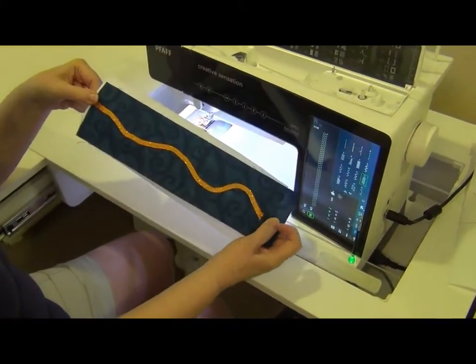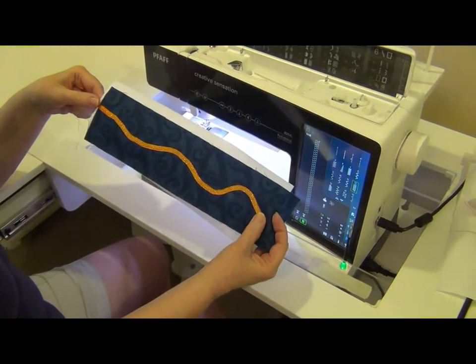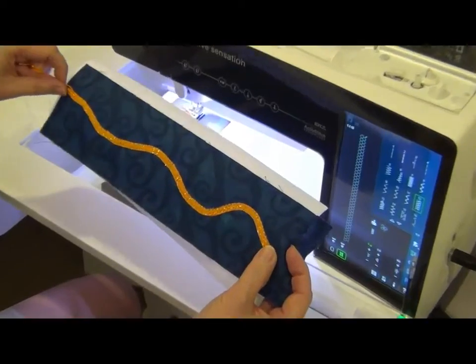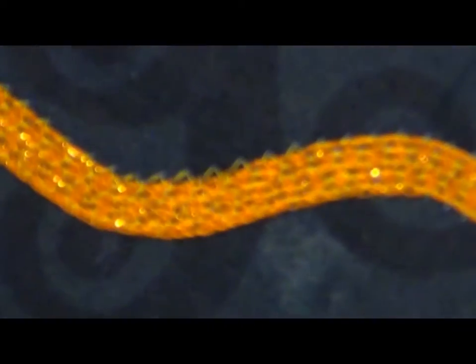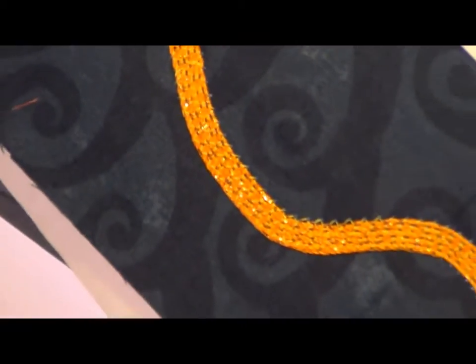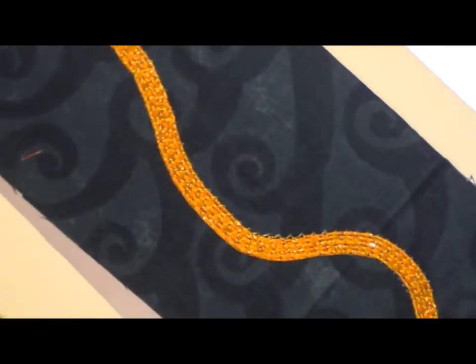And that is your seven to nine hole cording foot. Obviously, if you use that three hole foot, you would choose a little bit narrower stitch, but it would work the same way and you could put on some yarn or whatever decorative material that you wish to embellish your fabric with.